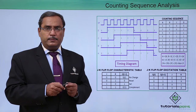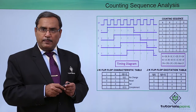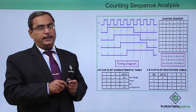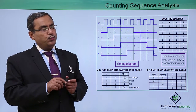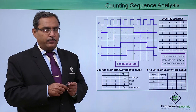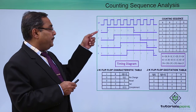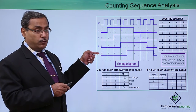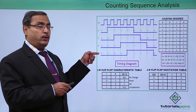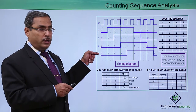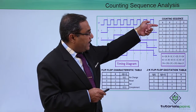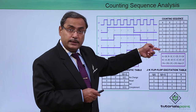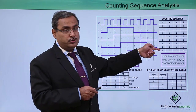Always remember: if a Johnson counter is having n number of bits, then it will have 2 × n number of states. How many bits are there? We are having 4 bits. So what is 2 × 4? That is 8. So it will be having 8 number of states in case of Johnson counter.